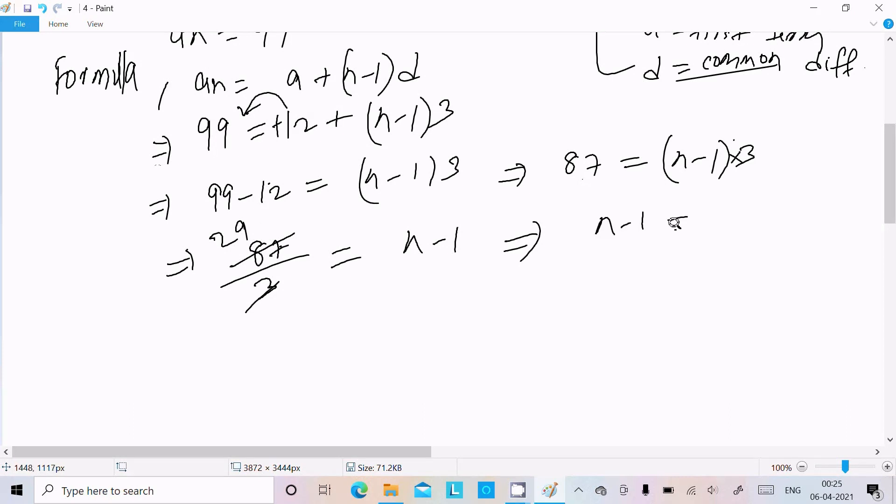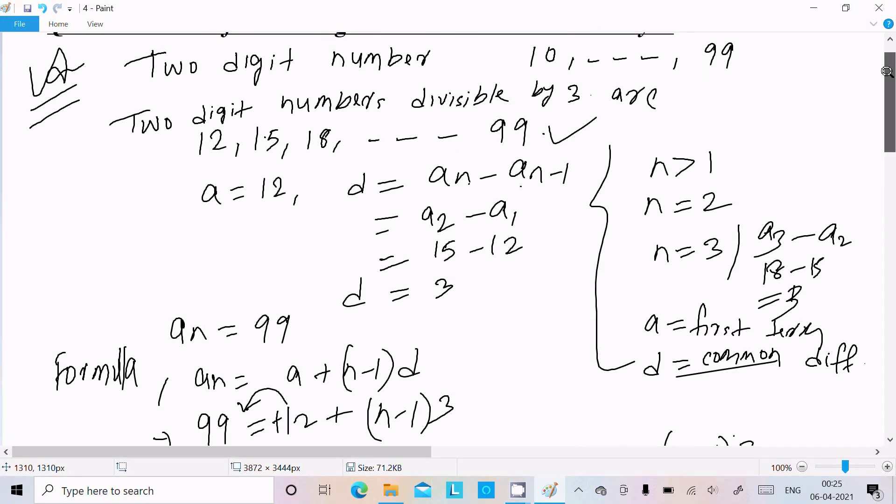n minus 1 equal to 29. n equal to 29 plus 1. So this moves on the right. Minus that changes to plus. So n value is now 30. So n is calculated.